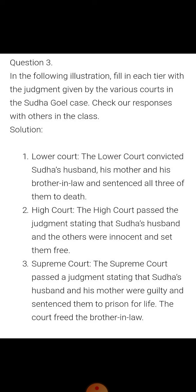The third question asks to fill in each tier with the judgment given by the various courts in the Sudha Goyal case. In the lower court, the lower court convicted Sudha's husband, his mother, and his brother-in-law and sentenced all three of them to death. When her husband applied to the high court, the high court passed a judgment stating that Sudha's husband and the others were innocent and set them free.